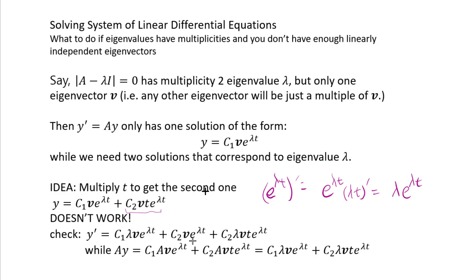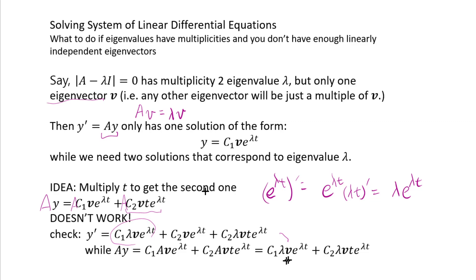When you differentiate t, you get 1; when you differentiate e to the lambda t, the lambda comes out again. Now let's see what happens when you multiply by A to get the right side. A times y — since v is an eigenvector, A times v equals lambda v. So those A·v terms become lambda·v terms. Comparing both sides, you see most terms agree, but there is one extra term that does not pair with the right side. This naive way of finding a second solution doesn't work because of the product rule.